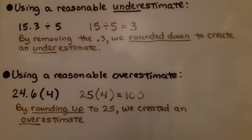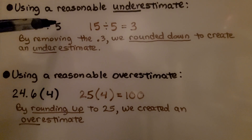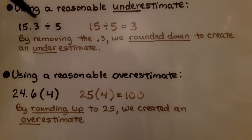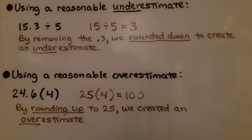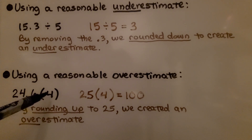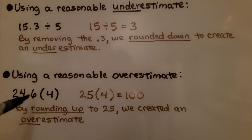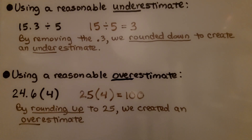Here's how we use a reasonable underestimate: if we have 15.3 divided by 5, by removing the 0.3 we round down to 15, creating an underestimate. 15 divided by 5 equals 3. For a reasonable overestimate, if we have 24.6 multiplied by 4, we round up to 25, making it an overestimate. 25 times 4 is 100, which we can do with mental math.